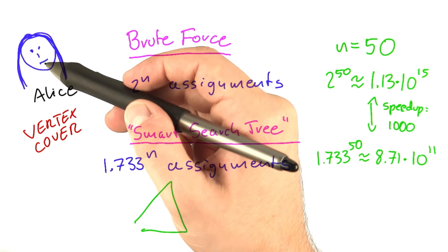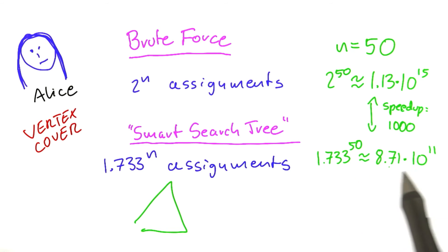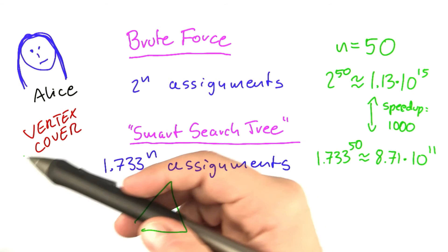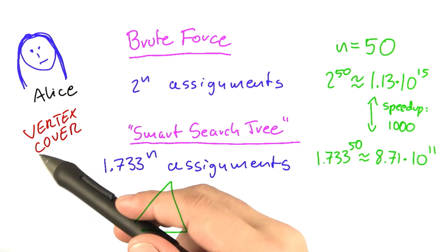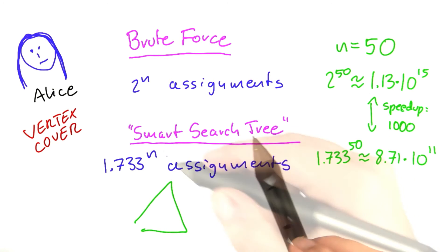Now, should Alice be happy about this? Well, probably not yet, because already for n equal to 50, the running time of the algorithm here gets rather large. So, if she is solving the problem for a telecommunications network with, say, 500 vertices, it'll still be out of the question to find an optimal solution using this search tree.